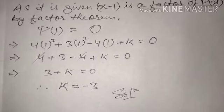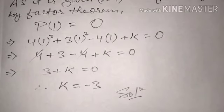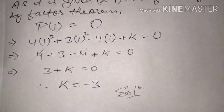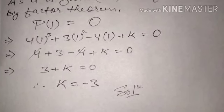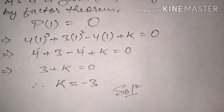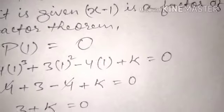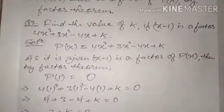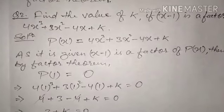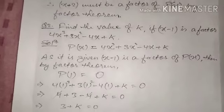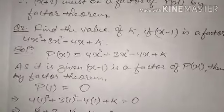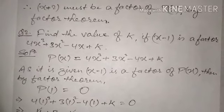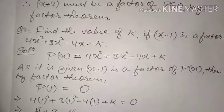Solving: 4(1)³ + 3(1)² − 4(1) + k = 0, which simplifies to 3 + k = 0, giving k = −3. This is a very simple equation. Keep the theorems in mind and you will definitely understand the problems. Everything is interrelated, so before watching new content, make sure to watch the previous videos as well.